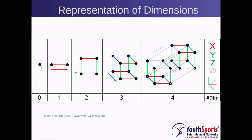Another thing to note is that the number of dimensions relates to the number of points. For every corresponding point in one dimension, the next dimension has double the amount of points. To make a line you have two points; in the second dimension you have four points to make a square; to make a cube you have eight points; to make a hypercube in four dimensions you have 16 points; and for a fifth-dimension object you will have 32 points.